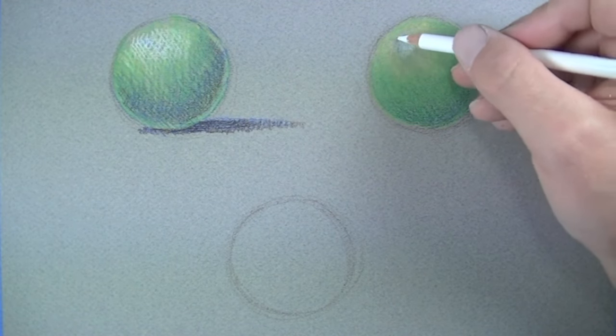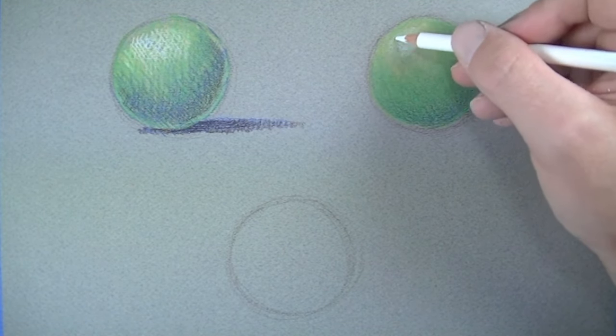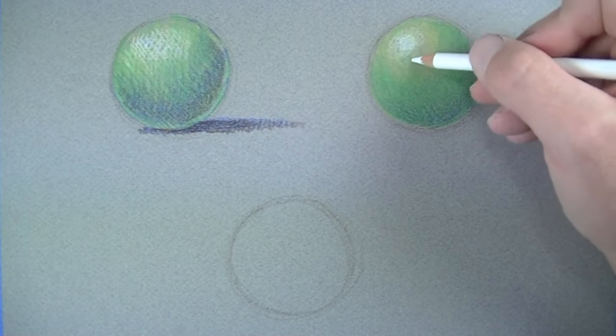Next, a white is used to establish a strong highlight. This white is layered over the top of the yellow.